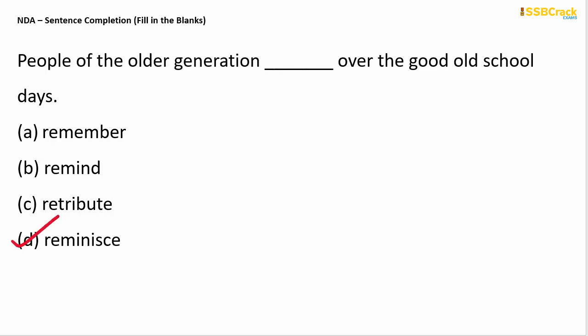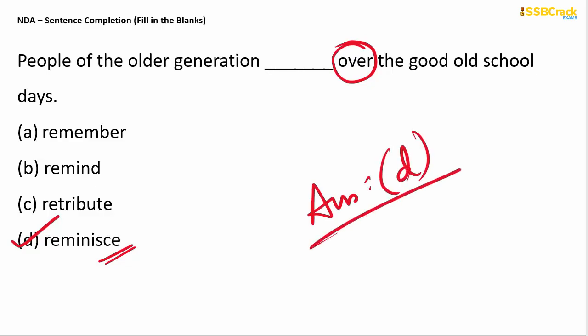Next question: 'People of the older generation ___ over the good old school days.' The correct answer is 'reminisce,' which means to indulge in enjoyable recollection of past events. Among the other options — remember, remind, retribute — none takes the preposition 'over' after it except 'reminisce.' So 'reminisce over' is the appropriate phrase, and your answer is option D.